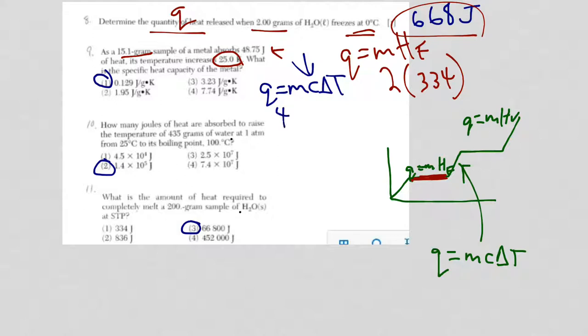So it's 48.75, that's Q, equals 15.1, that's the mass. C is our X, or our unknown, and delta T is 25. Okay, so get C alone. Multiply 15.1 times 25, and you're going to divide that into 48.75, and you should get choice 1.